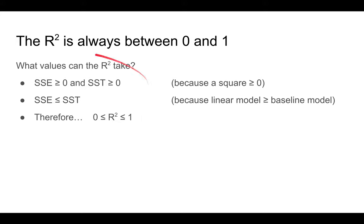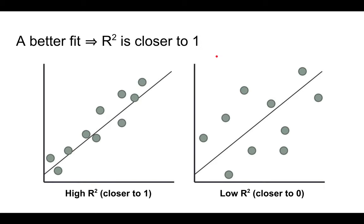If you think about what values can the r squared take, you'll find that the r squared is always between zero and one. First, the SSE and SST are sum of squares, and a square number is always bigger than or equal to zero. Secondly, the baseline model is also a linear model. So the best linear model should be at least as good as the baseline model. So this means the sum of square errors is always smaller than the total sum of squares. You can work that out to show that the r squared is always between zero and one. The better the line fits the data, the higher the r squared and the closer it is to one. If it's a worse fit, the r squared gets lower and closer to zero.